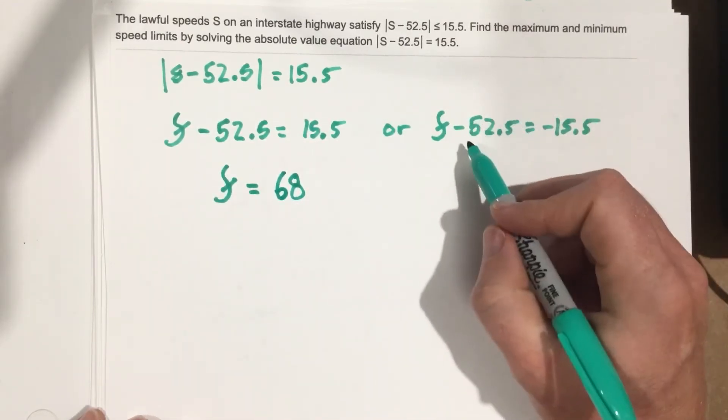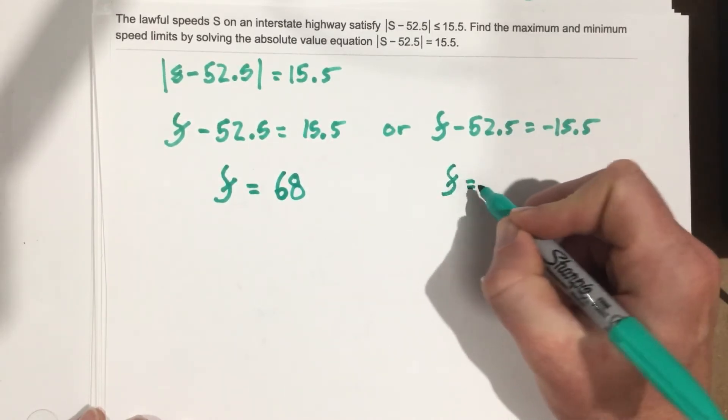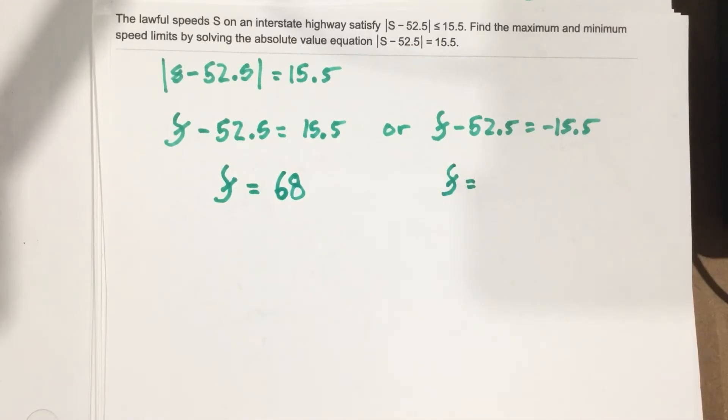Let's add 52.5 over here and we get s equals negative 15.5 plus 52.5, which is 37.